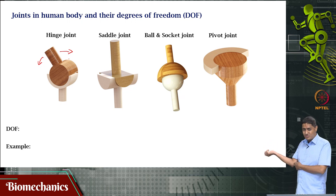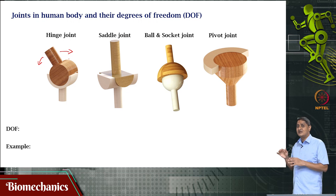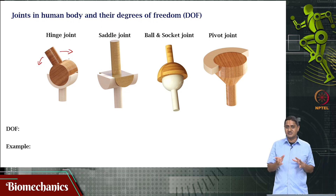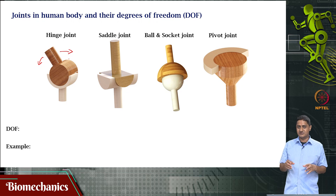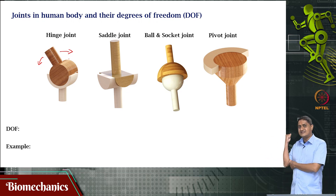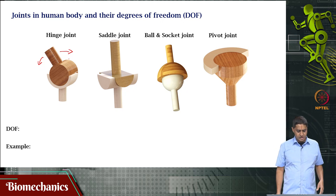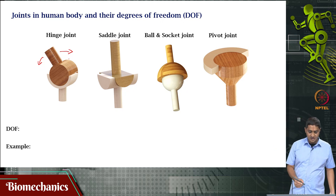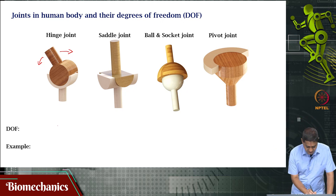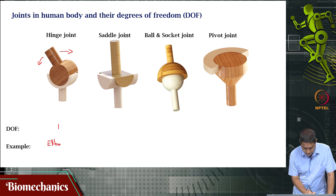Well, actually this other movement also happens, but that is not fully an elbow joint movement, so that is outside the scope of this discussion. Here we are discussing the single degree of freedom joint — a hinge joint. It has one degree of freedom; the example is the elbow joint.